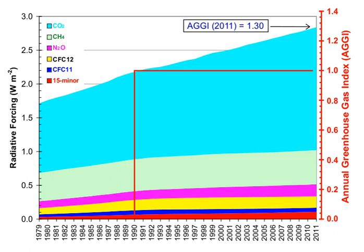The global warming potential depends on both the efficiency of the molecule as a greenhouse gas and its atmospheric lifetime. GWP is measured relative to the same mass of CO2 and evaluated for a specific timescale. Thus, if a gas has a high radiative forcing but also a short lifetime, it will have a large GWP on a 20-year scale but a small one on a 100-year scale. Conversely, if a molecule has a longer atmospheric lifetime than CO2, its GWP will increase when the timescale is considered. Carbon dioxide is defined to have a GWP of 1 over all time periods. Methane has an atmospheric lifetime of 12 ± 3 years. The 2007 IPCC report lists the GWP as 72 over a time scale of 20 years, 25 over 100 years, and 7.6 over 500 years.